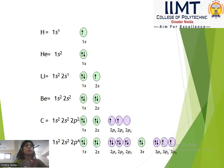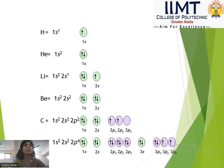Next is the Pauli Exclusion Principle. Pauli's Principle states that an orbital can accommodate a maximum of two electrons, and these two electrons must have opposite spins.